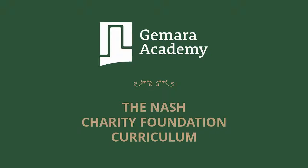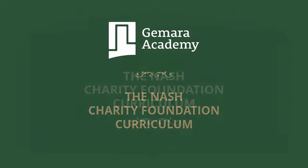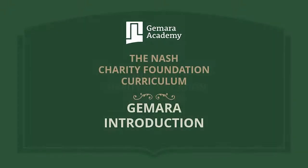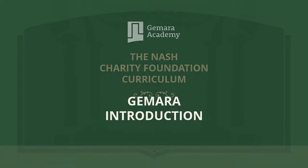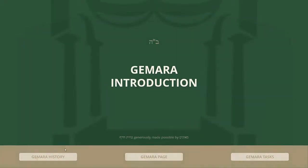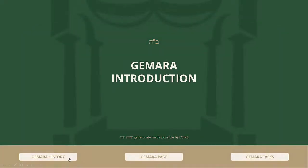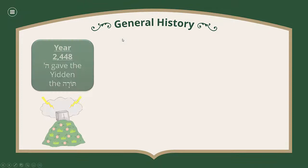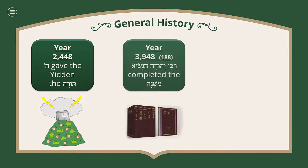Welcome to this introduction to Gemara presentation. We're going to begin with the history of Gemara. In the year 2448 Hashem gave the Yidden the Torah, and then 1500 years later — this is an estimate date — 1500 years later after the time of the Mishkan, after the time of Bayis Rishon,